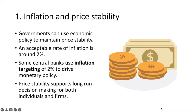This is because 2% inflation is generally accepted as a sign of a healthy economy. Price stability supports long-run decision making for both individuals and firms. On the Bank of England website, they explain that in order to keep inflation low and stable, the government sets an inflation target of 2%. This helps everyone plan for the future. If inflation is too high or it moves around a lot, it's hard for businesses to set the right prices and for people to plan their spending.